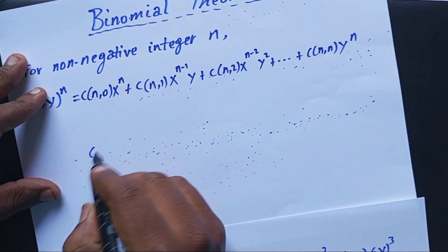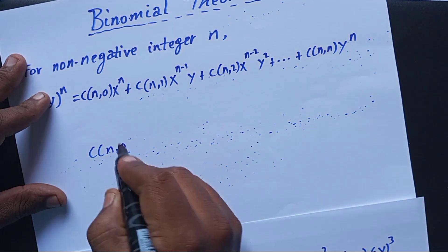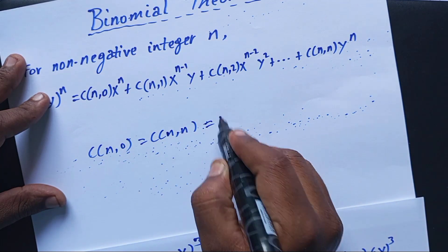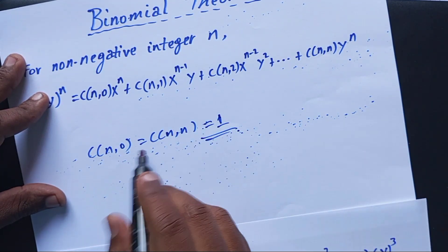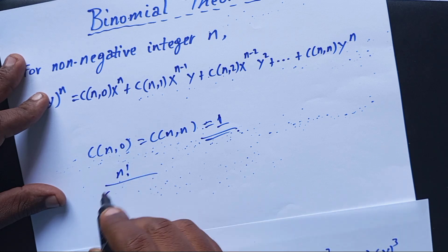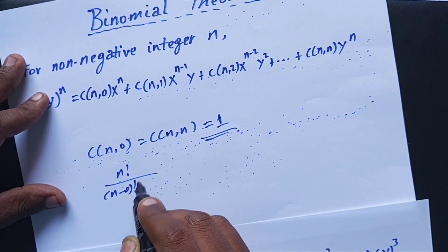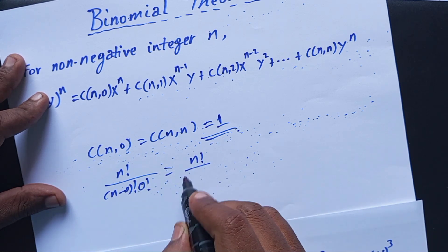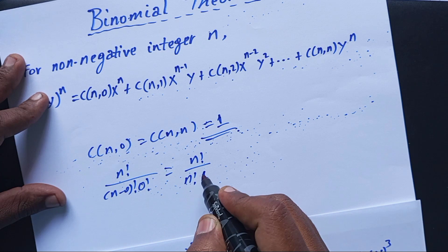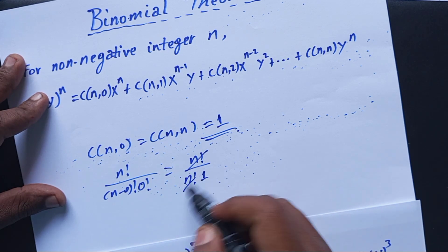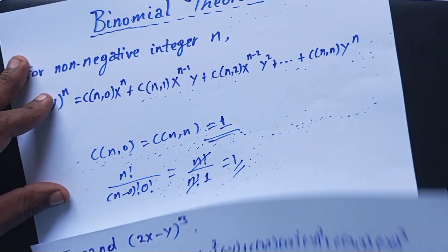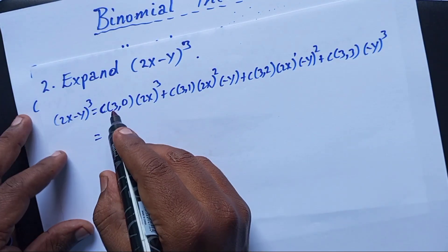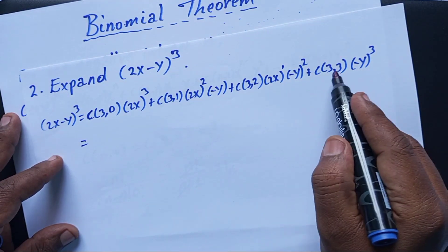Remember that C(n,0) and C(n,n) for any positive integer n are always equal to 1. We can verify: n! over (n-0)! times 0! equals n! over n! times 1, and since 0! equals 1 by definition, the result is 1. So C(3,0) and C(3,3) are both 1.